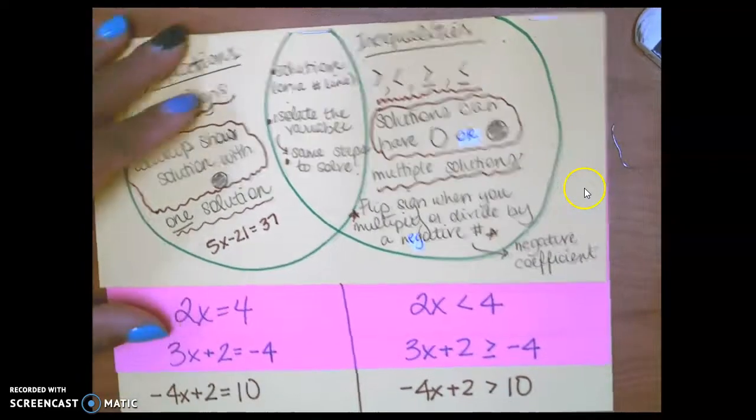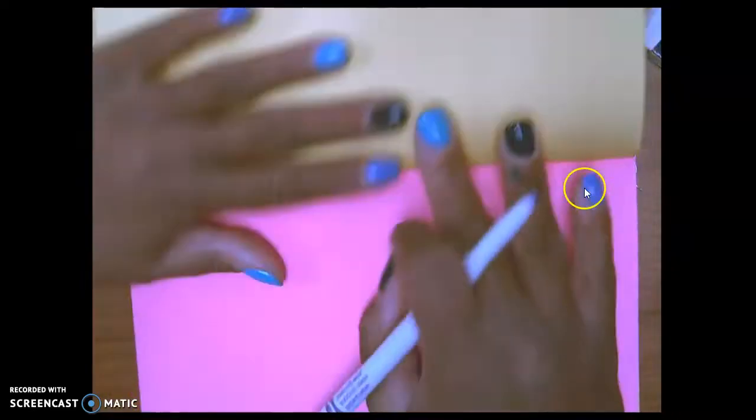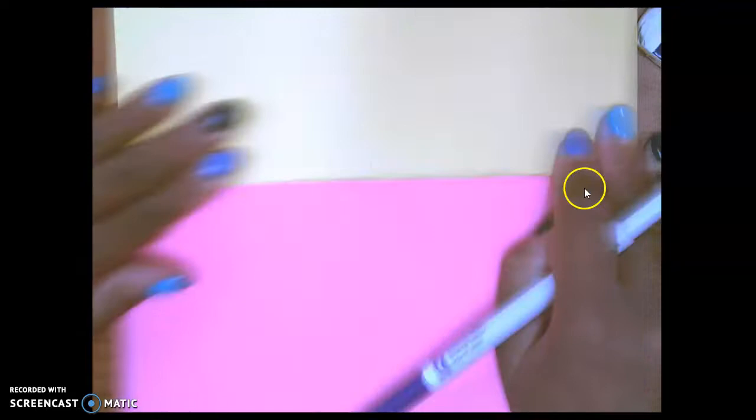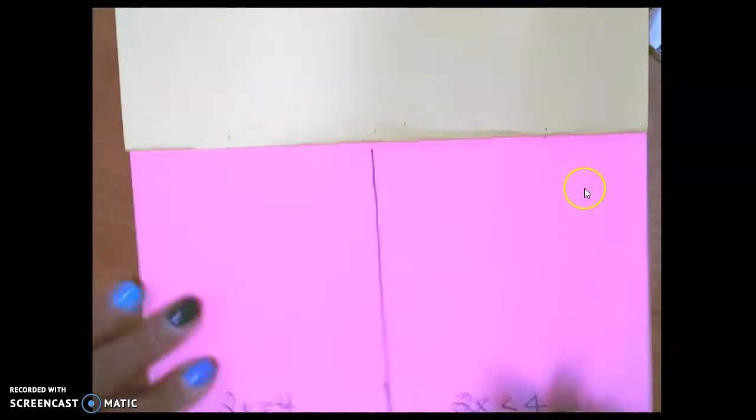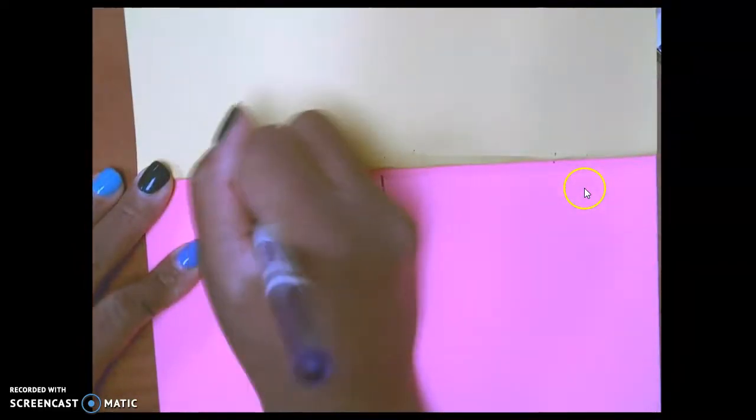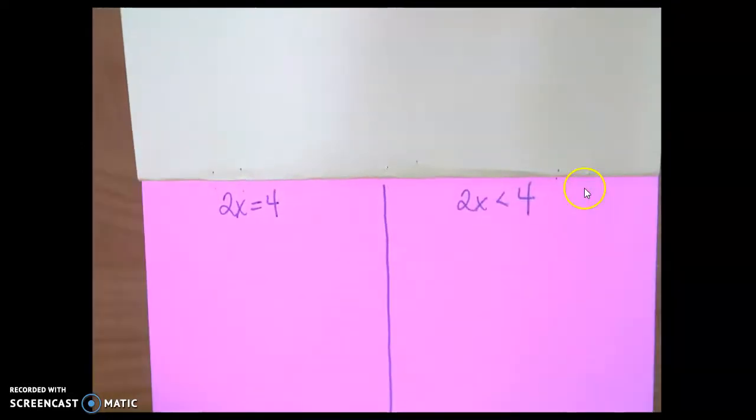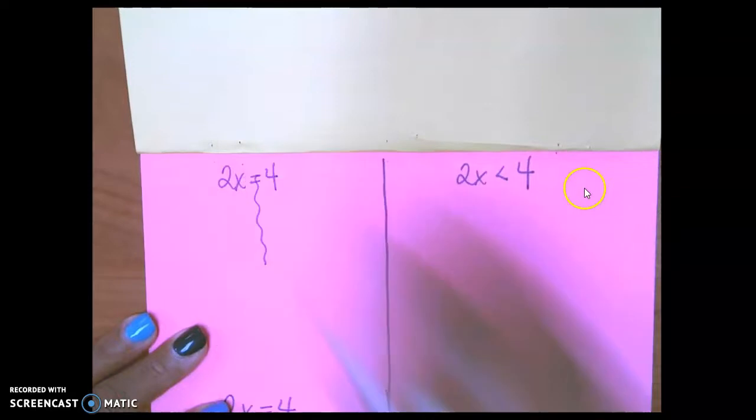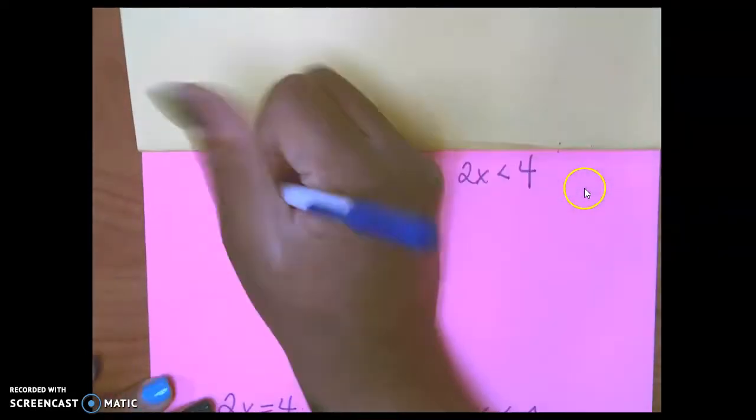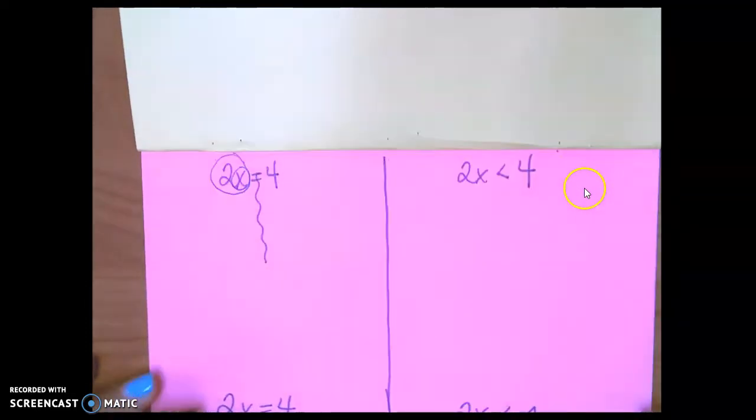So our first set of examples is just a one-step solution process or solution discovery process. So draw a line through the middle of your paper. According to your notes, I want you to make a habit of using certain steps to solve equations because it helps. So first, I'd like you to draw a river through your equal sign, and then circle your variable, and circle your variable and its friend.